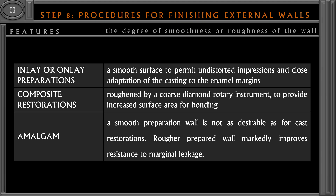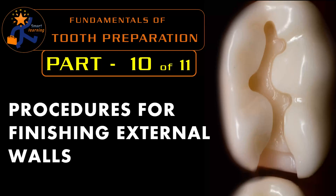For inlay or onlay preparations, a smooth surface is mandatory because it permits an undistorted impression and provides close adaptation of the casting to the enamel margin. For composite restorations, a roughened preparation using a coarse diamond instrument is essential because it increases the surface area for bonding and provides better bond strength. For amalgam tooth preparation, a smooth wall is less desirable — studies have shown that a rougher preparation may improve marginal leakage.